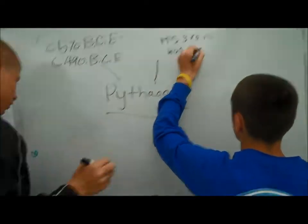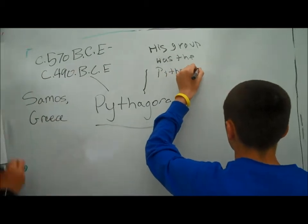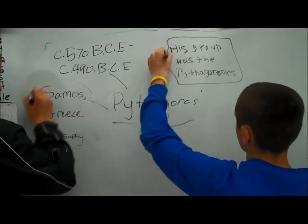He was born in Samos, Greece, but later he moved to Croton in the Italian Peninsula. He considered himself a philosopher, but he was known as a mathematician.